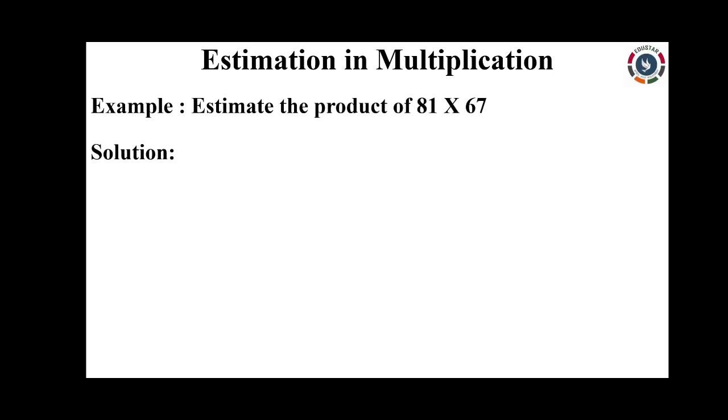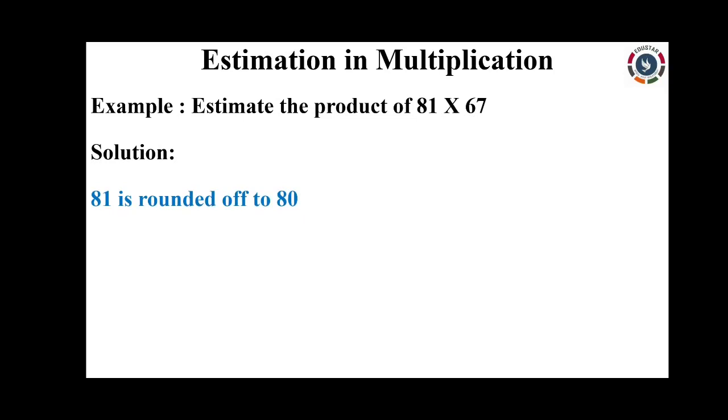Next, we are going to see about estimation in multiplication. Let us see this with an example: estimate the product of 81 into 67. Round off the given numbers. The first number is 81. In 81, the ones digit is 1. Since 1 is less than 5, replace the ones digit by 0 and keep the tens digit as it is. So 81 is rounded off to 80.